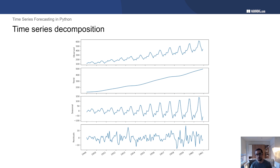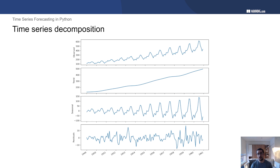Then we have the seasonal component, which captures the periodic fluctuations in the time series. As you can see, every year it goes up and down. Finally, we have the residuals — any variations not explained by the trend and the seasonal component. The residuals seem a bit random: they go up, they go down, sometimes positive, sometimes negative. When you add all those components back together — residuals, seasonal, and trend — you get back your observed data.